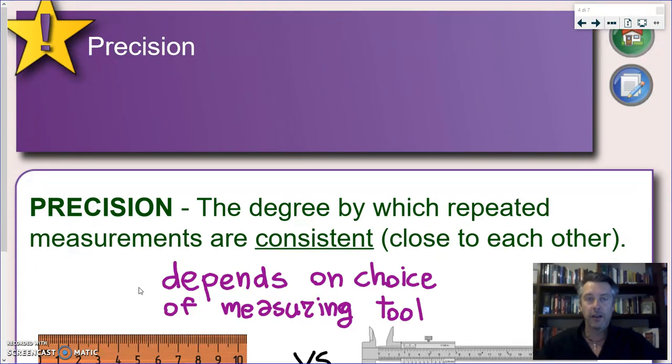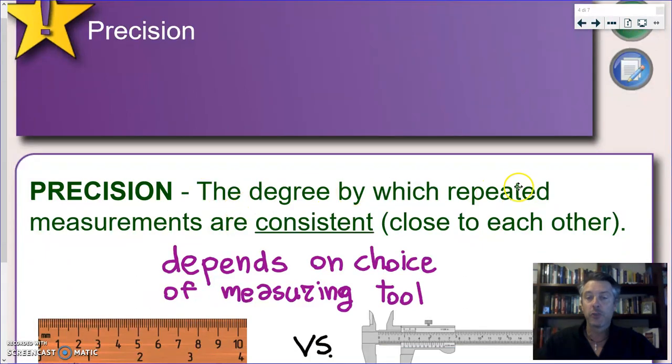And when we want to define the error or the uncertainty in a measurement, one of the main features is what we call precision. And here is our definition of precision: precision is the degree by which repeat measurements, so that means if we are measuring the same thing over and over again, if we repeat these measurements, these measurements are consistent, which means they are close to each other. You get maybe different numbers, but they are not so different one from the other. So this is what we mean with precision: being consistent. If you repeat the measurement, you get a number which is close to the numbers you got before.